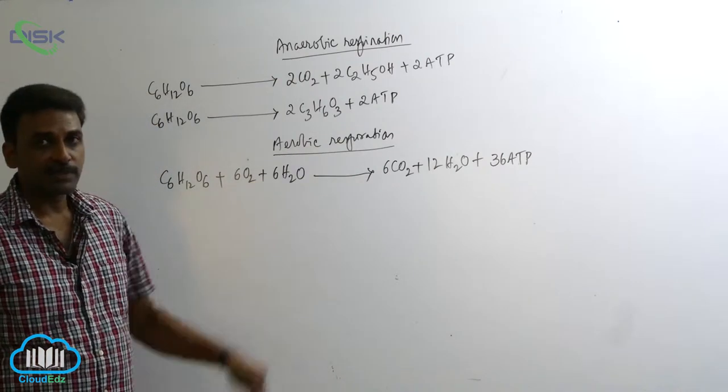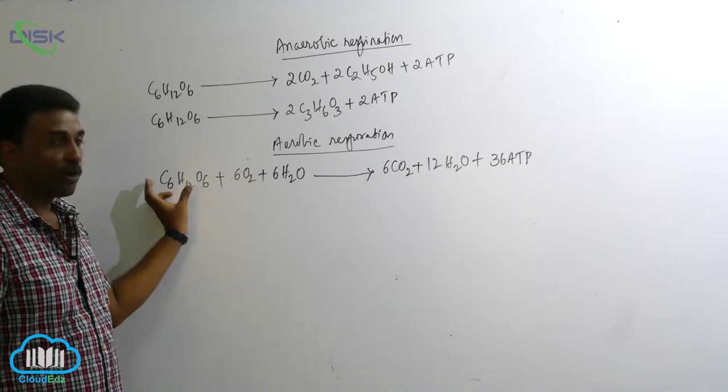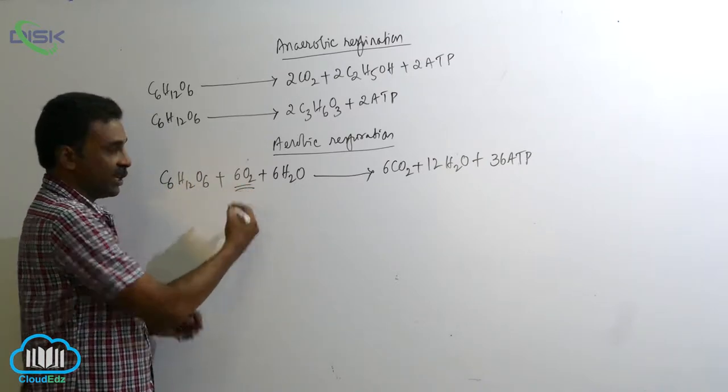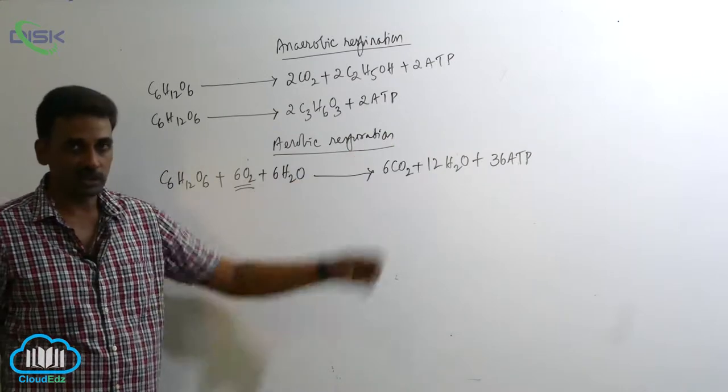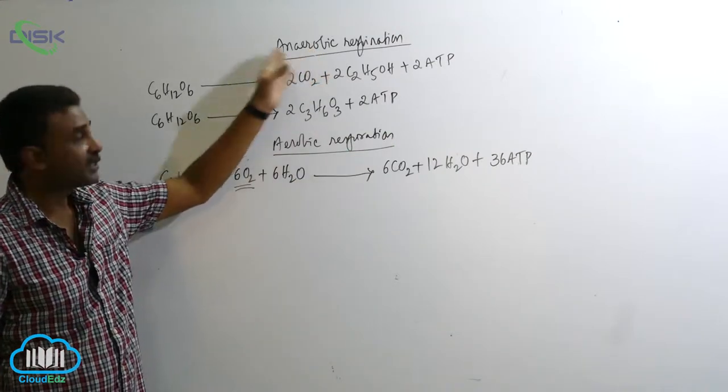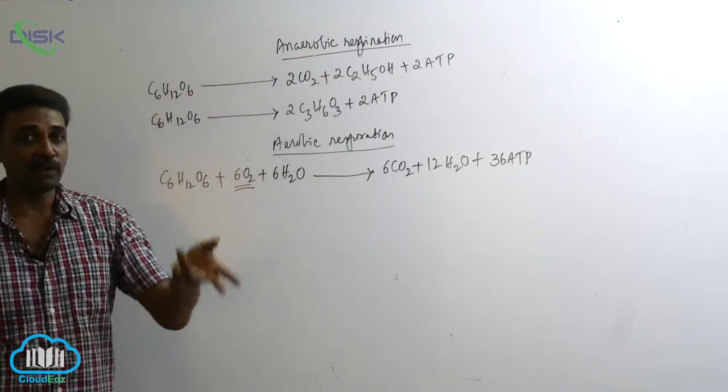In aerobic respiration the glucose molecules undergo oxidation, so it will combine with oxygen to produce energy. But in anaerobic respiration there is no utilization of oxygen.